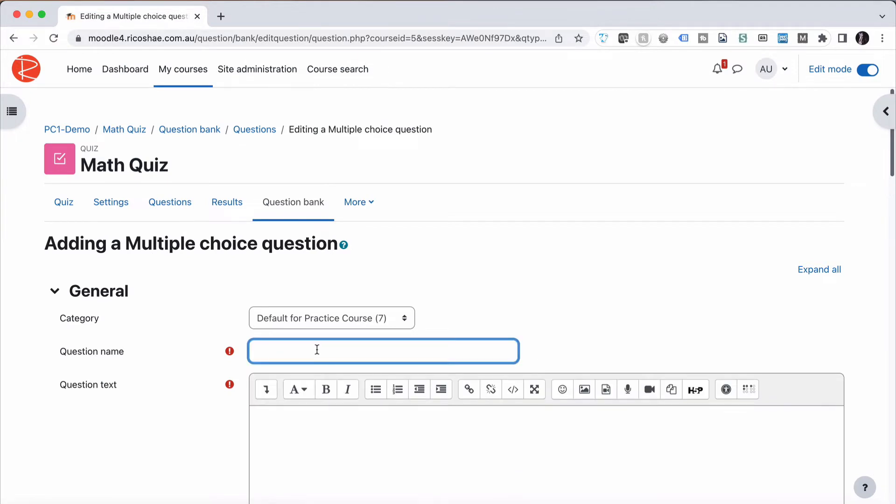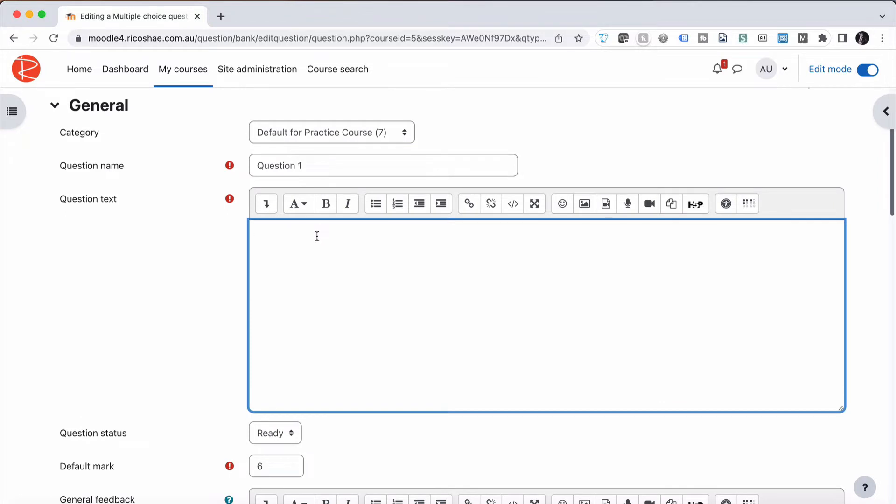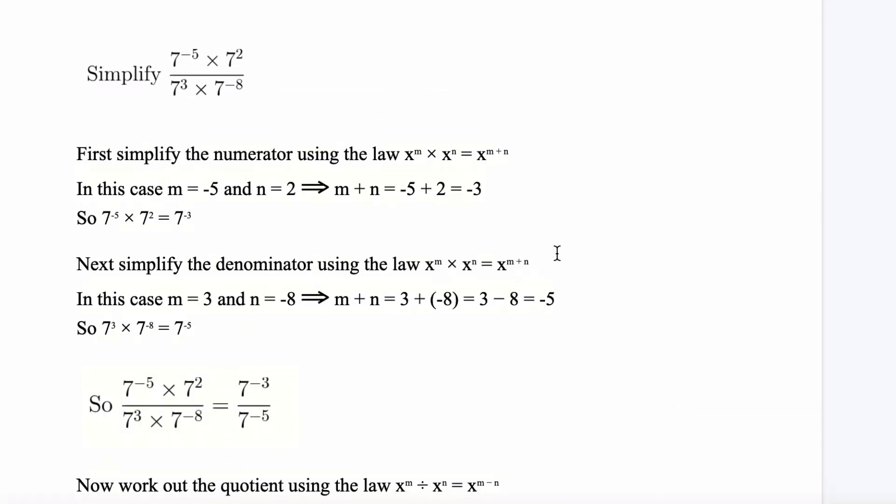All we need to put in this one is maybe a multiple choice and choose Add. We'll call this question, just call it question 1. That's fine for now. And then we're going to put our question in here. So I've picked out an example question, which is simplify 7 to the minus 5 by 7 squared.